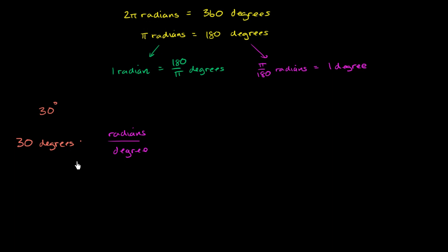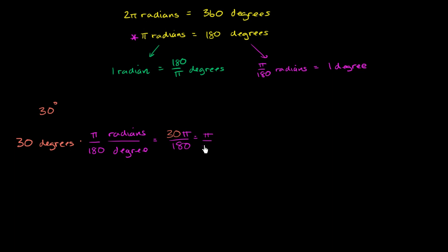If I multiply the number of degrees I have times the number of radians per degree, we're going to get radians. And hopefully that makes intuitive sense. We just have to think about: if I have π radians, how many degrees is that? Well, that's 180 degrees — coming straight out of this. π radians for every 180 degrees, or π over 180 radians per degree. This is going to get us 30 times π over 180, which simplifies to 30 over 180 is 1 over 6. So this is equal to π over 6 radians.